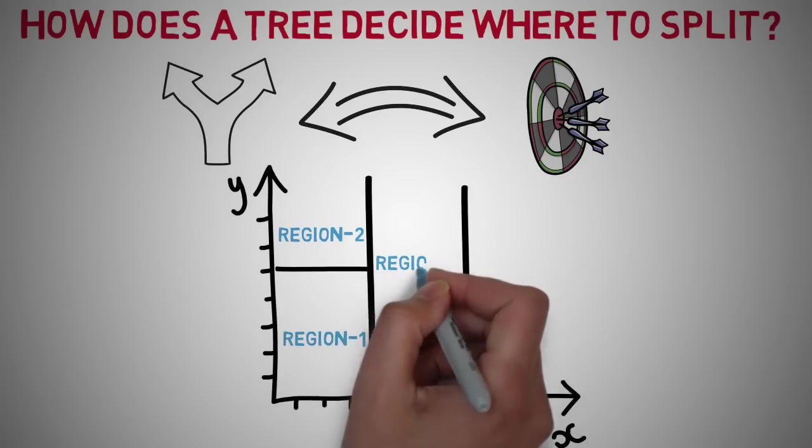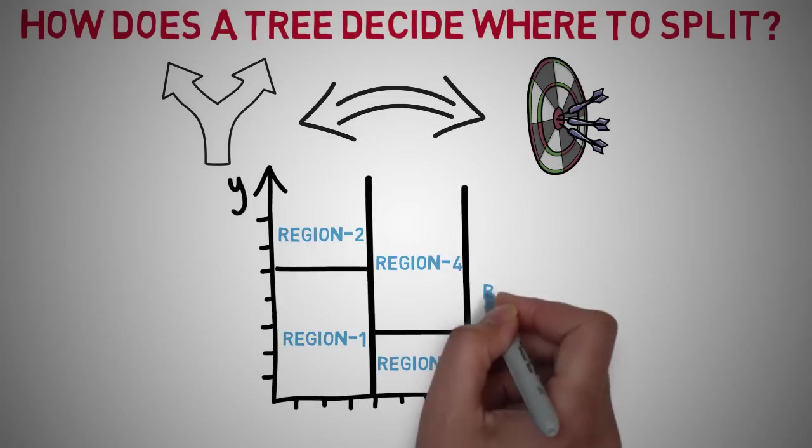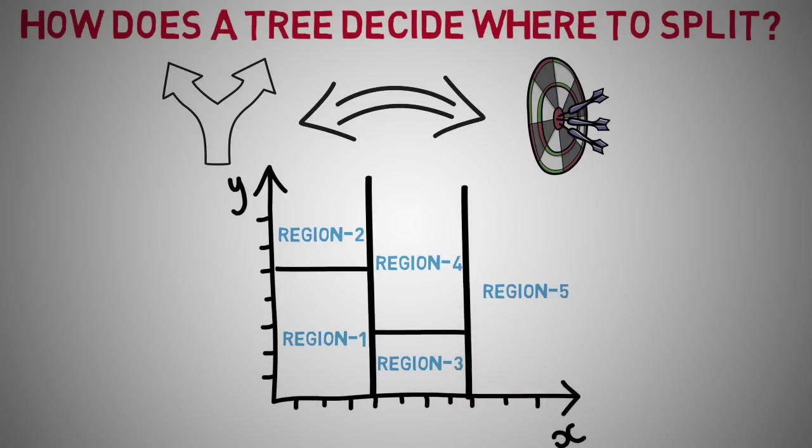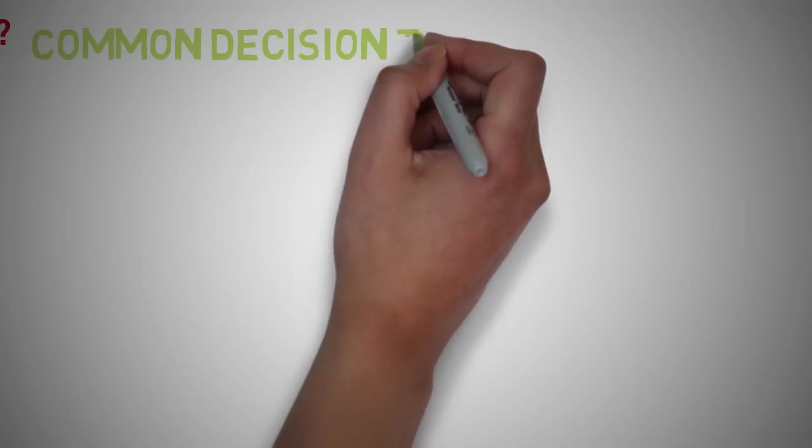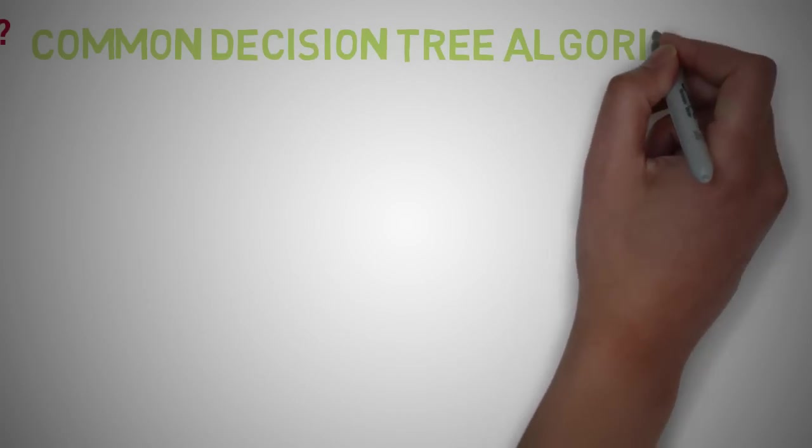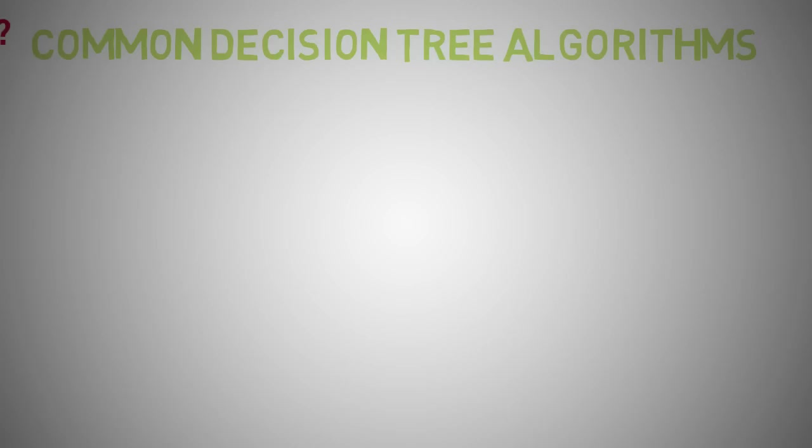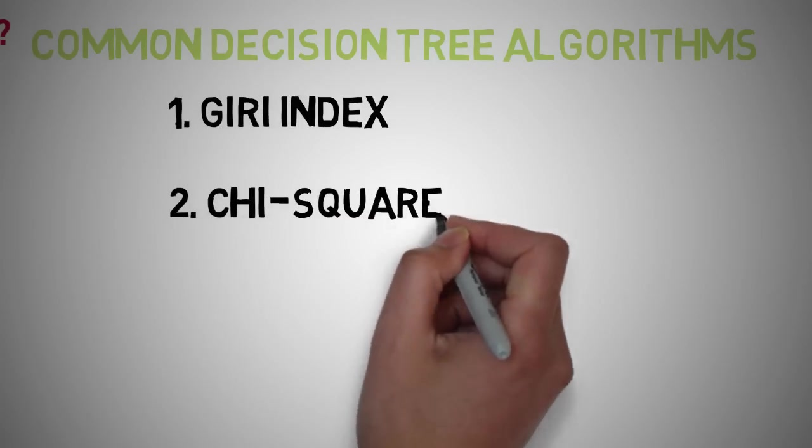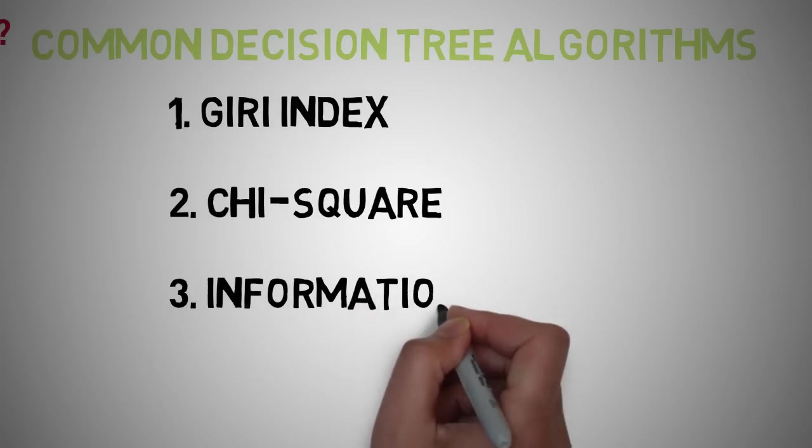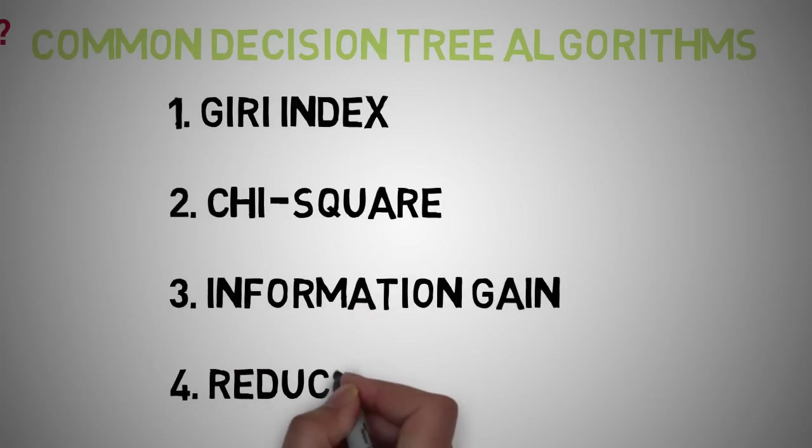Decision tree splits the nodes on all available variables and then selects the split which results in the most homogeneous sub-nodes. The algorithm selection is also based on the type of target variables. Let's look at the four most commonly used algorithms in decision tree.